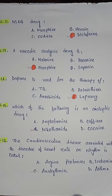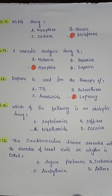Question number fifteen: which of the following is an analeptic drug — option A amphetamine, option B caffeine, option C nikethamide, option D cocaine. So the correct answer is option C nikethamide.